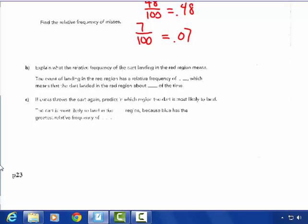Explain what the relative frequency of the dart landing in the red region means. The event of landing in the red region has a relative frequency of one tenth, which means that the dart landed in the red region about ten percent of the time. If Lucas throws the dart again, predict in which region the dart is most likely to land. It's already landed most likely in the blue, so the dart is most likely to land in the blue region because blue has the greatest relative frequency of forty-eight percent, or forty-eight out of a hundred.